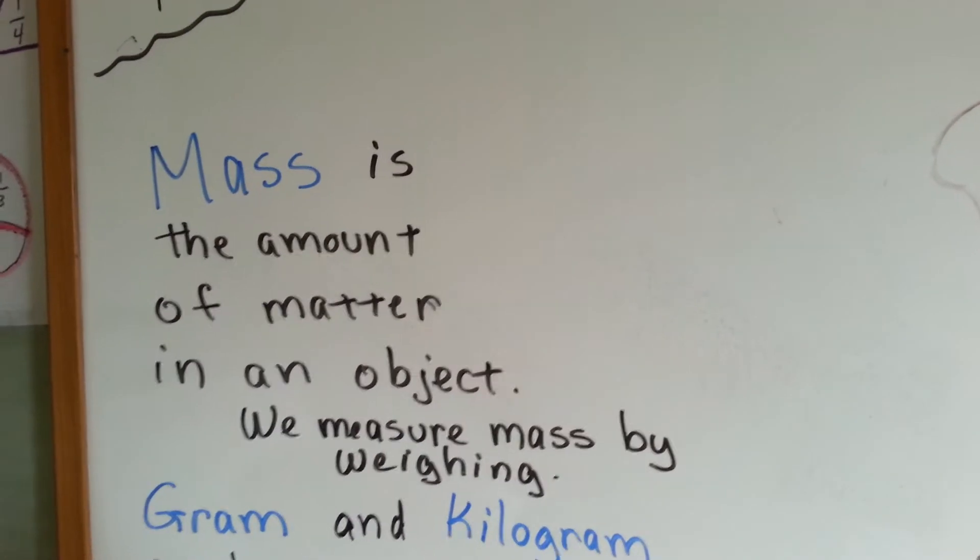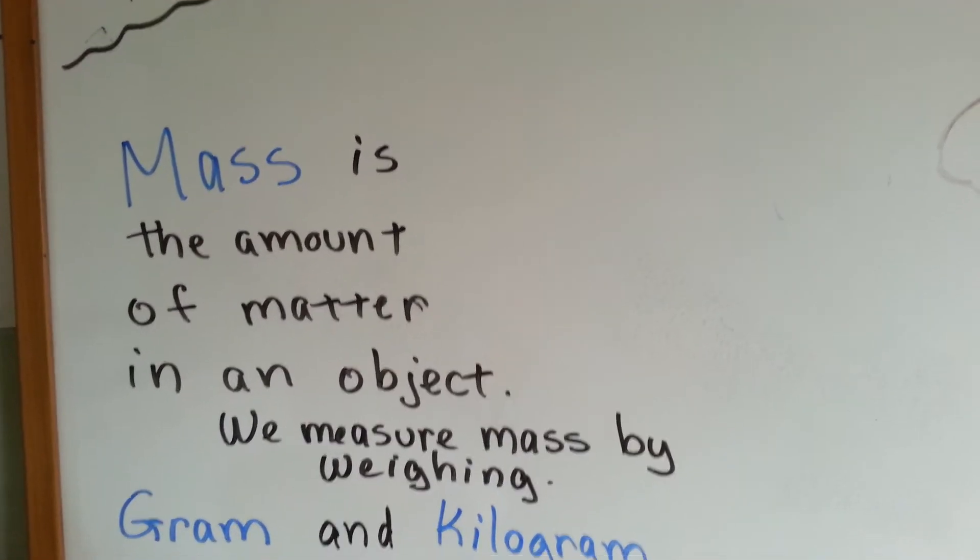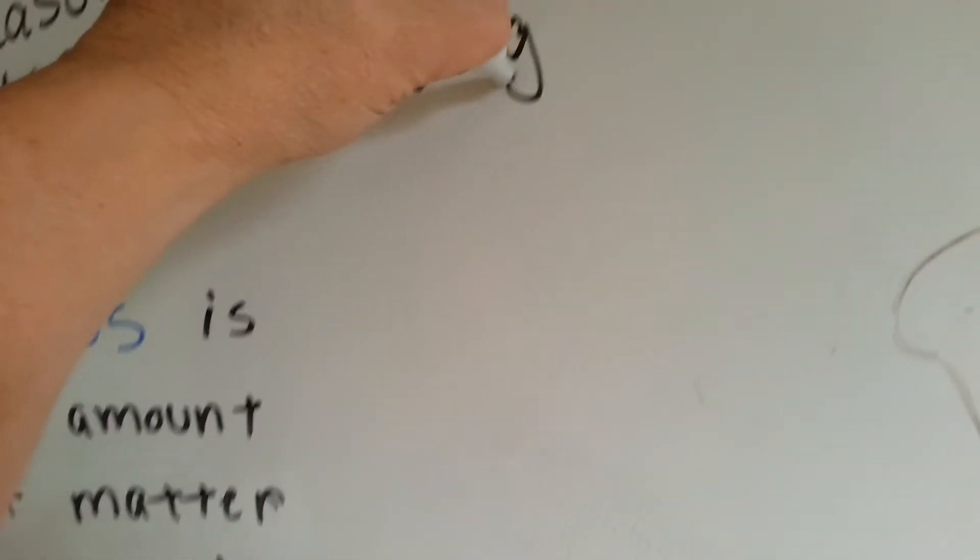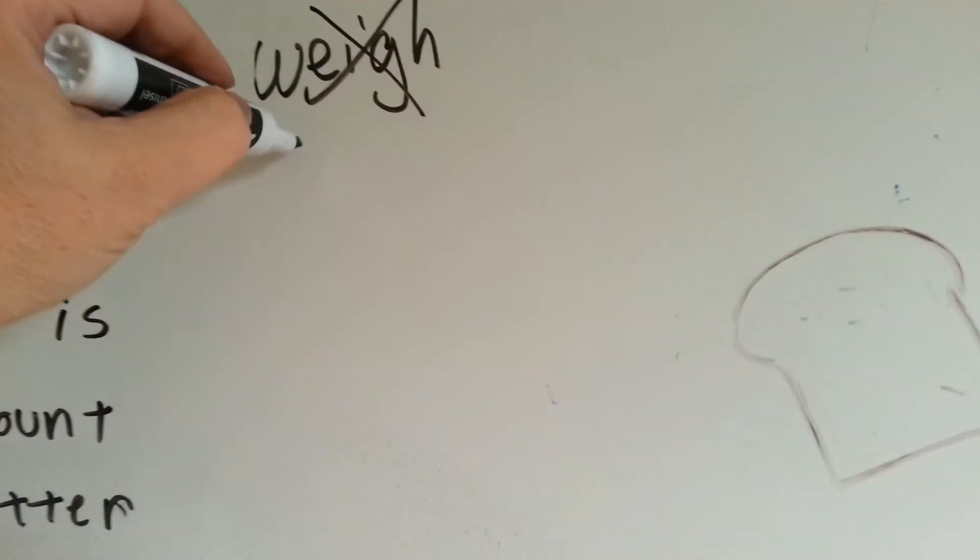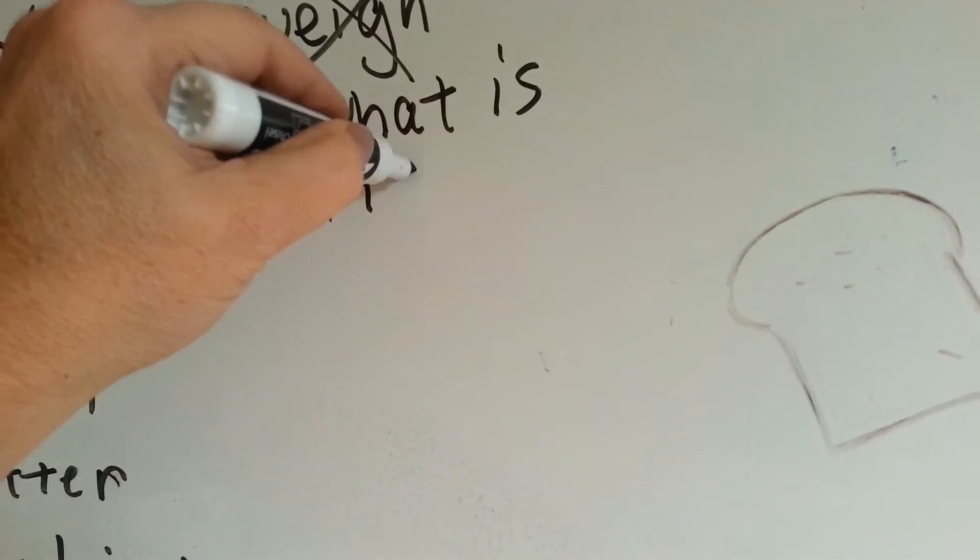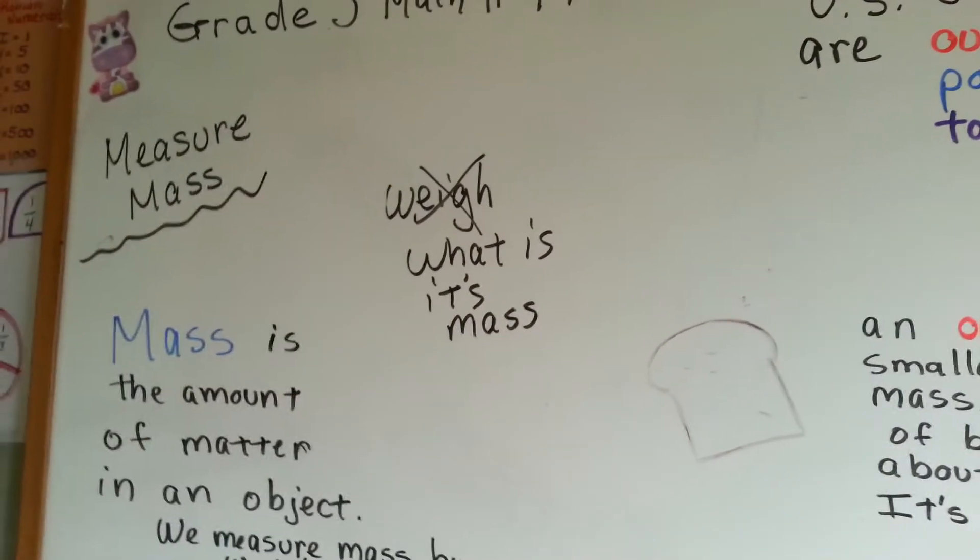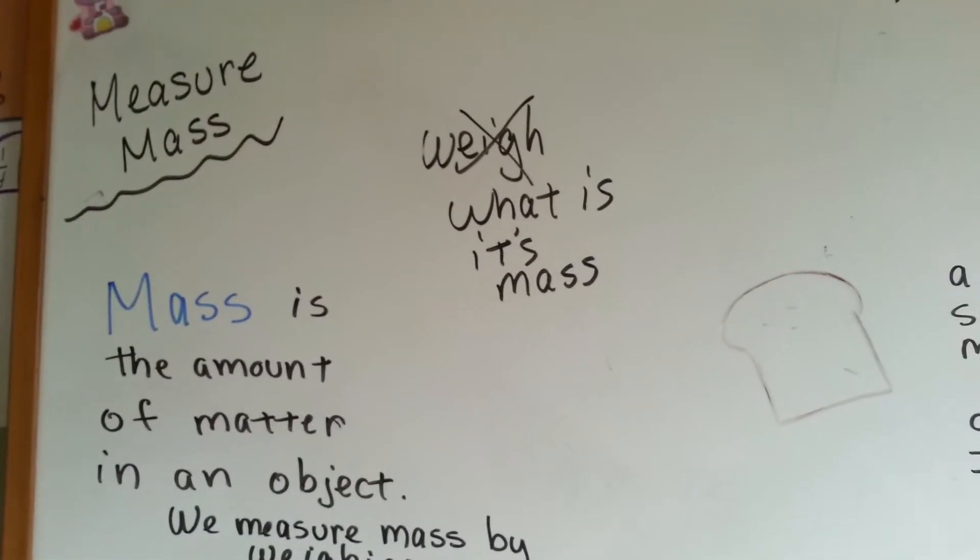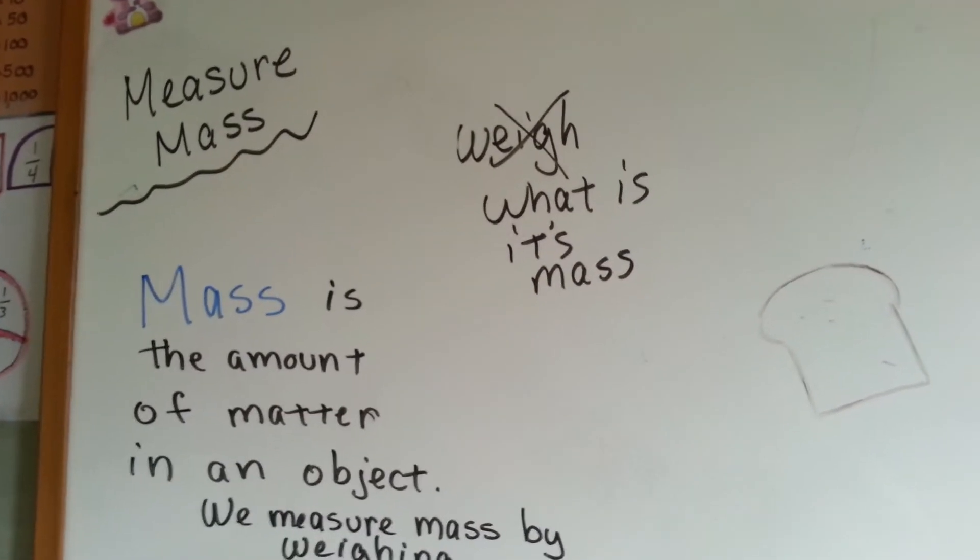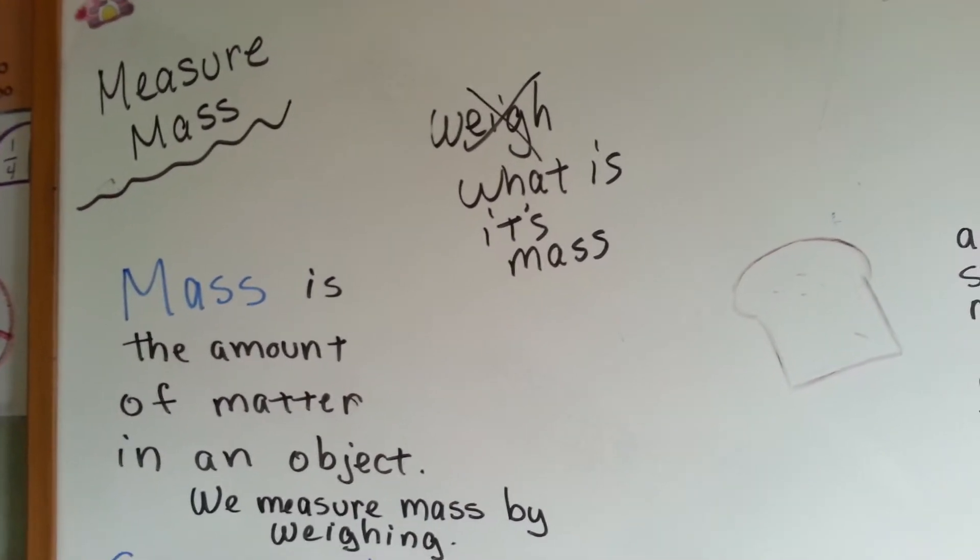In fact, one of the biggest mistakes people make is they say, how much does that weigh? We shouldn't be saying how much does it weigh. We should be saying, what is its mass? People have commonly said weigh, so society has been saying weigh. But what we really should be saying is what is its mass? What is your mass? Instead of how much do you weigh, we should say what is its mass or what is your mass.